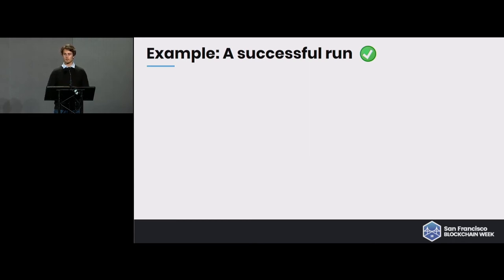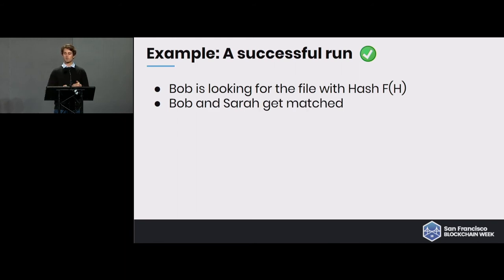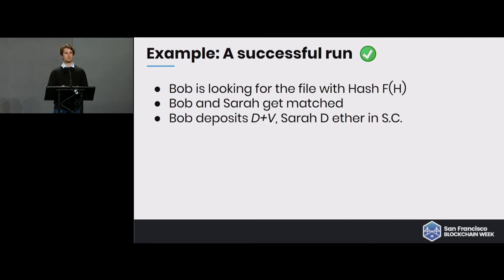Bob is looking for the file with hash H — maybe he found it on a torrent website and knows the hash of the file he's looking for. Bob puts a bounty online saying he'd like this file and is willing to pay one ether. Bob and Sarah get matched; Sarah says she has the file and is willing to send it and get paid. Both put deposits onto the smart contract — more concretely, Bob puts the deposit plus the file value, and Sarah puts the deposit.